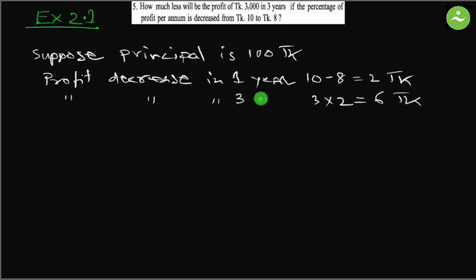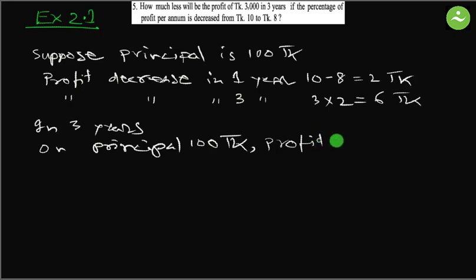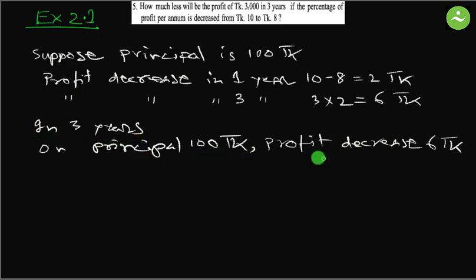On a principle of 100 taka, the profit decreases by 6 taka in three years. We put profit decrease on the right side because we have to find out how much profit decreases. So on a principle of 100 taka, profit decreases by 6 taka in three years.